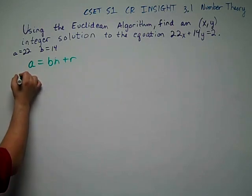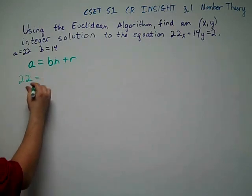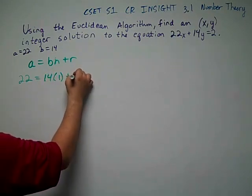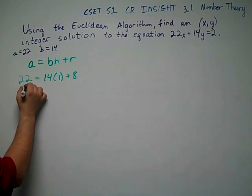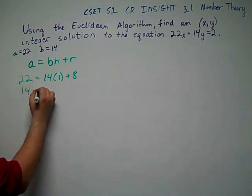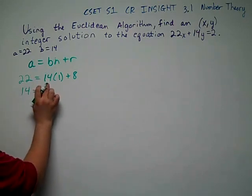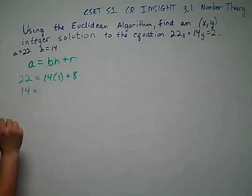We're going to apply the Euclidean algorithm with the remainder of eight. If you don't understand the technique being done here, refer to the previous Euclidean algorithm question with two larger numbers finding the GCD.